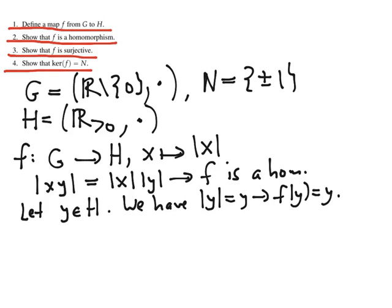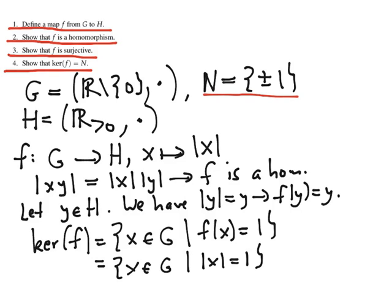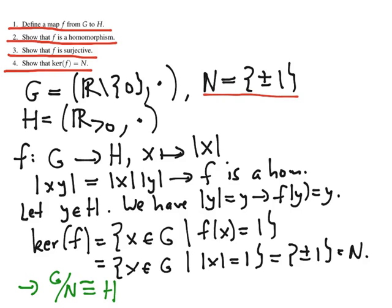Finally, we need to check that the kernel of F equals N, which is {±1}. The kernel of F is all non-zero real numbers X such that F of X equals the identity in H. Since H is the positive reals, the identity is 1. And since F of X is the absolute value of X, we're asking which non-zero real numbers have absolute value 1. That's exactly ±1, which is N. We've checked all four conditions — the hypotheses of the fundamental theorem of group homomorphisms — and so we conclude that G mod N is isomorphic to H. That is, the non-zero real numbers under multiplication modulo {±1} is isomorphic to the positive real numbers under multiplication.